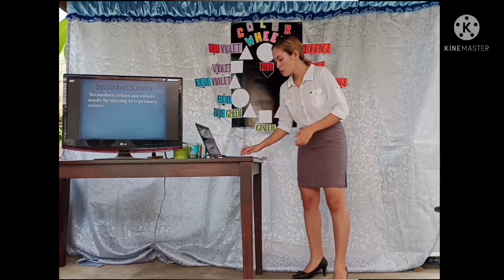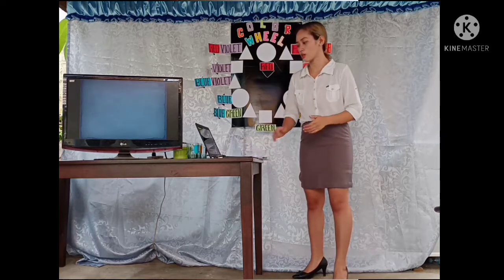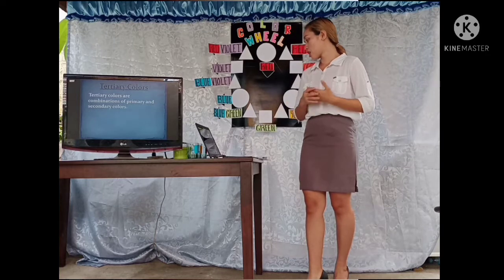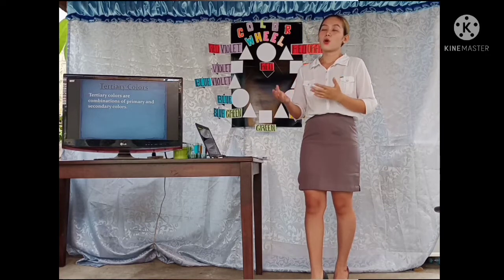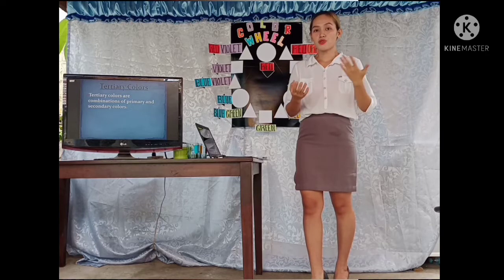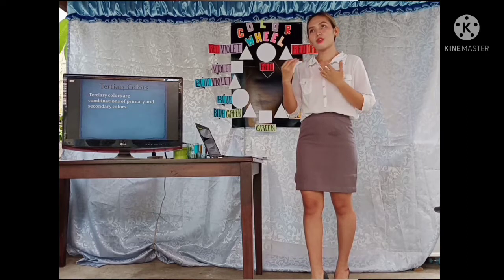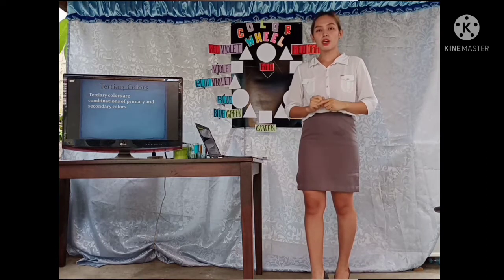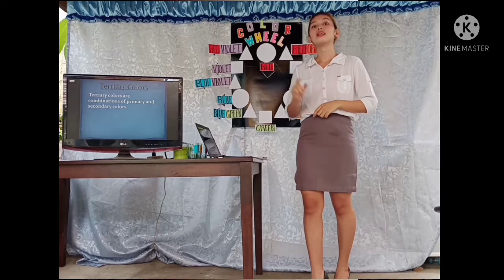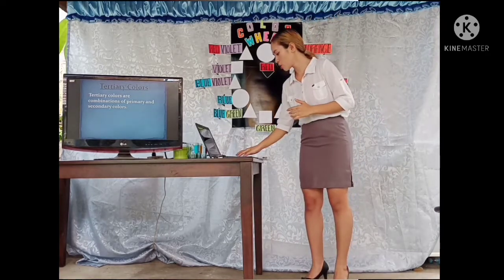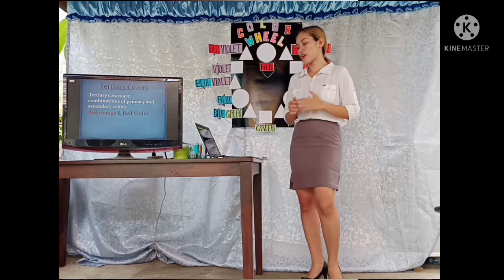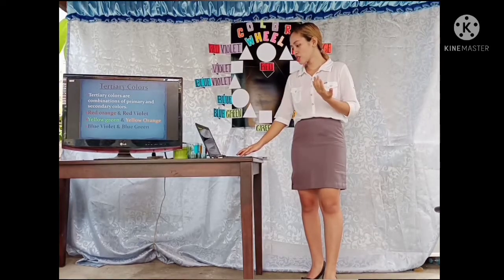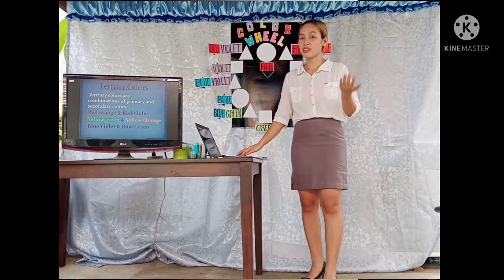Now, let's proceed to the tertiary colors. Tertiary colors are combinations of primary and secondary. Primary are those red, blue, and yellow. And then the secondary ones are those green, orange, and violet. If you put together one primary color and one secondary color, the result is tertiary colors. So, tertiary colors are red-orange, red-violet, yellow-green, yellow-orange, blue-violet, and blue-green.